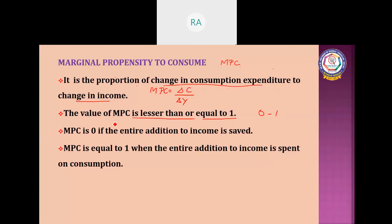MPC is 0 if the entire addition to income is saved, and MPC is equal to 1 when the entire addition to income is spent on consumption. When income is saved without spending, you get MPC as 0. When the addition to income is completely spent on consumption, MPC will be equal to 1.